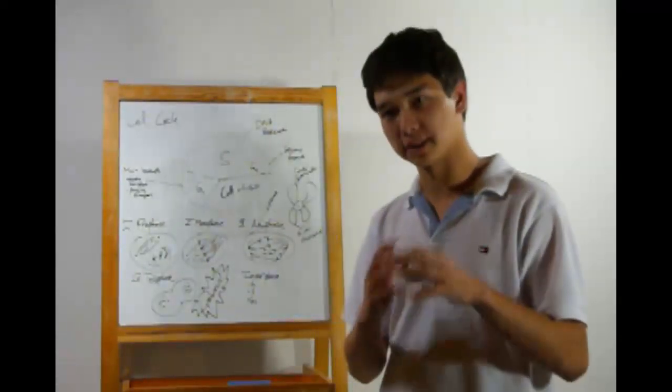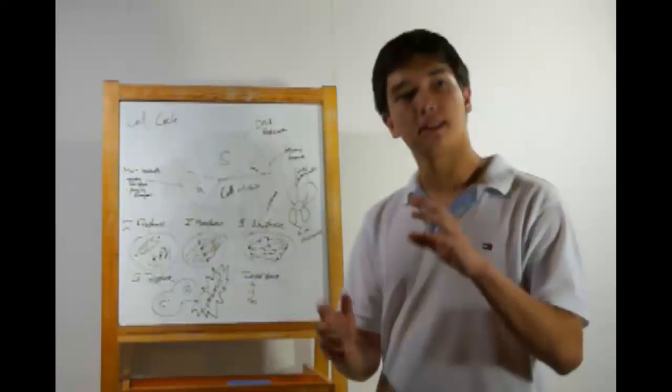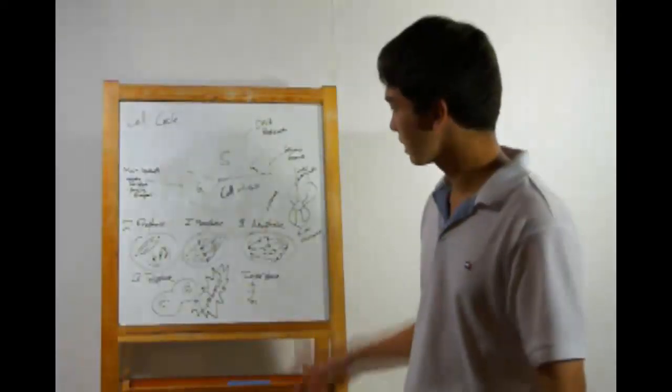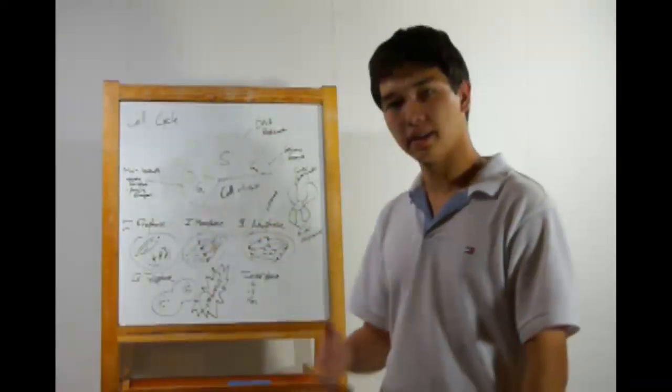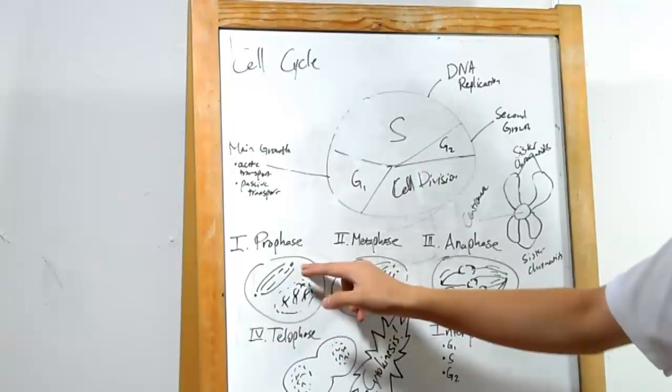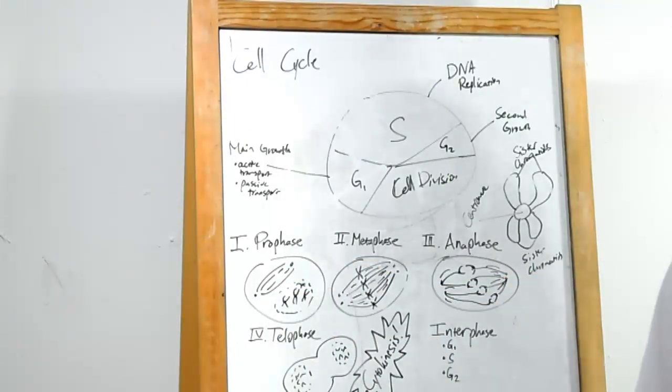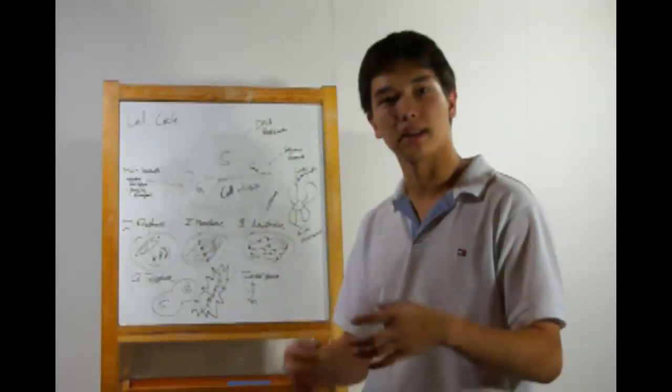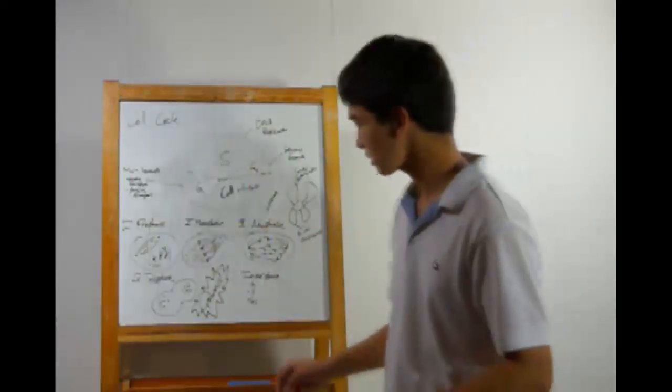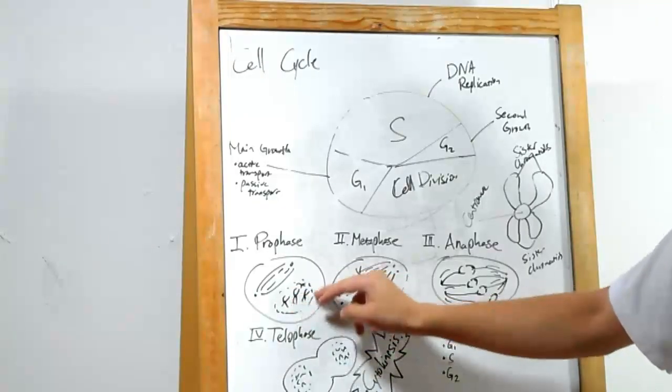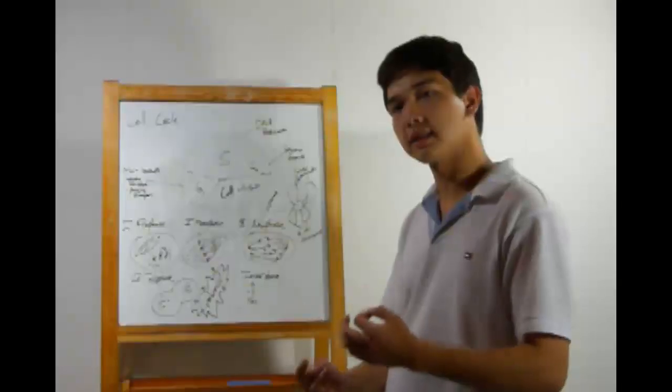Cell division is usually mitosis. We start out in the prophase. Here, the centromeres go to opposite ends of the cell and start forming spindle fibers. Centromeres usually just sit around the cell and provide structure. The nuclear envelope is also starting to break down, and you can see the chromosomes.